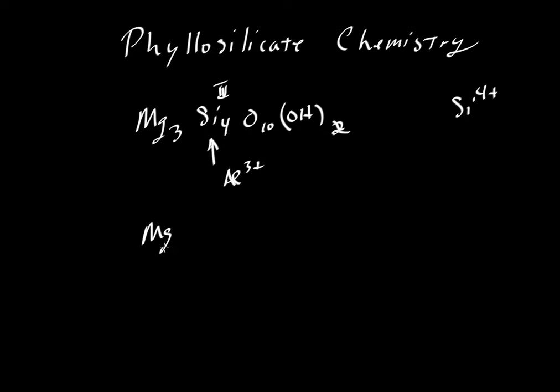We would lose a charge, so we would have Mg3 and then we'll write AlSi3O10OH2. Now if this fellow over here is neutral, then this fellow here should have a negative one charge because we've pulled out, let's just put this in square brackets.